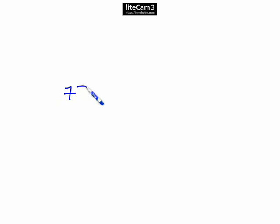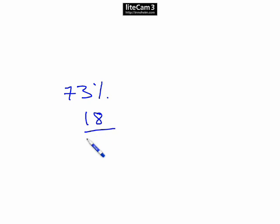Question 10. A pupil scored 73% in a test. In a later test, the pupil scored 18 out of 24. What was the difference between the percentage scores obtained by the pupil in the two tests?